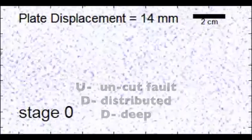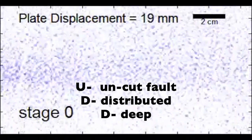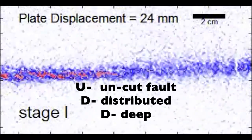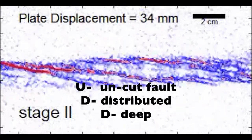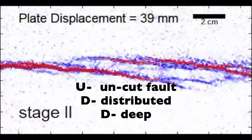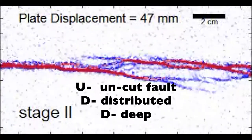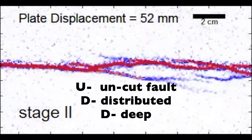And then the UDD experiment is the most complex set of boundary conditions, probably most like what's going on in the crust. So that has an uncut fault, distributed basal shear, over a deep dislocation. So essentially the UDD is going to be giving us the most complex evolution of faulting, the most number of faults, and that is most likely what's going on in the crust.